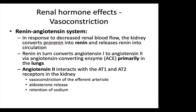Multiple hormones regulate vasoconstriction. The renin-angiotensin system (RAS) is important: in response to decreased renal blood flow, the kidney converts pro-renin into renin, which converts angiotensin I to angiotensin II via ACE, primarily in the lungs. Angiotensin II interacts with AT1 and AT2 receptors in the kidney, leading to vasoconstriction of the efferent arteriole, aldosterone release, and sodium retention. The net effect is to increase systemic vascular resistance and maintain GFR when renal blood flow is reduced.